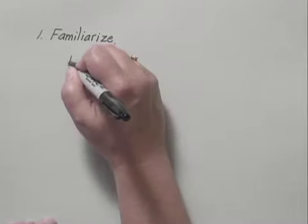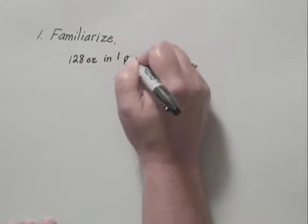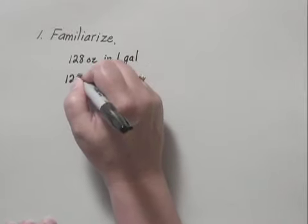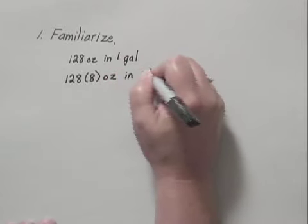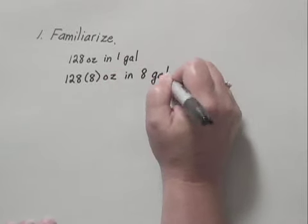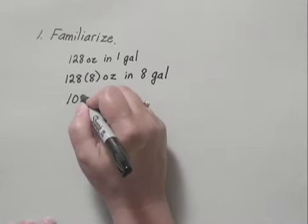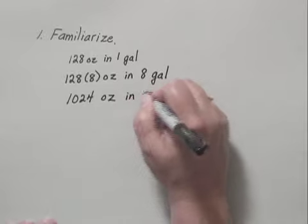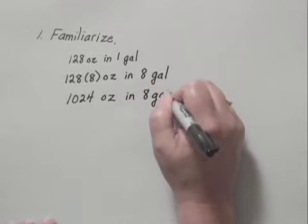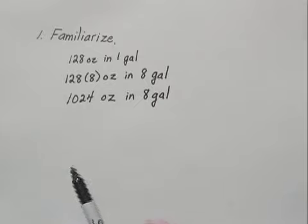We know there are 128 ounces in 1 gallon, so there should be 128 times 8 ounces in 8 gallons. 128 times 8 is 1024 ounces in 8 gallons. So instead of talking about 8 gallons, we'll talk about 1024 ounces in this jar.